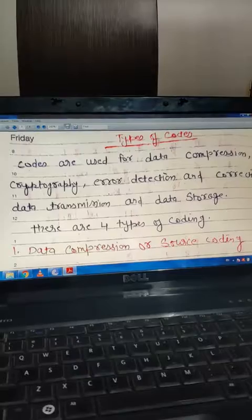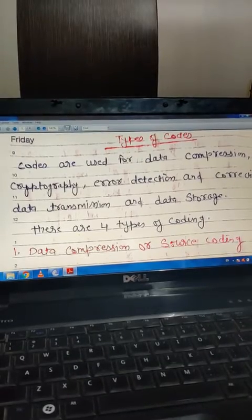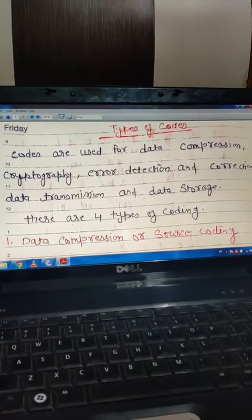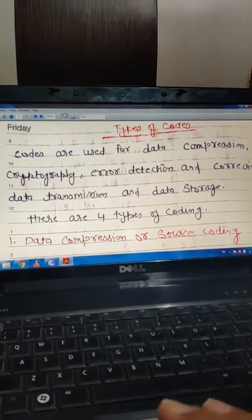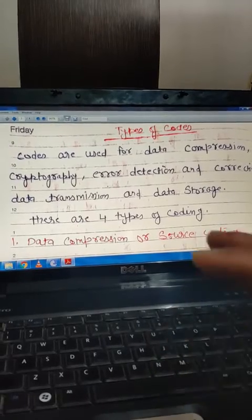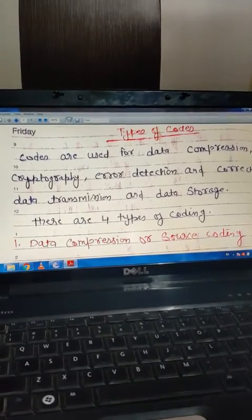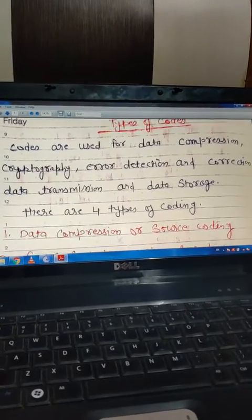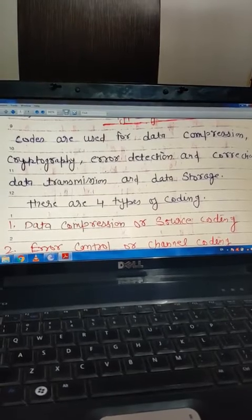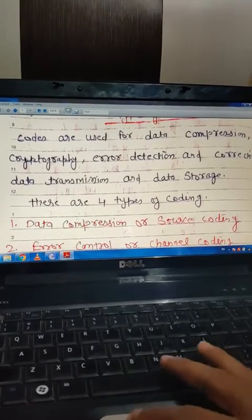Now let's see what is code and types of code. Codes are used in information theory and coding. Codes are very important because data is transmitted through a code. Data is encoded and finally we can decode the data. Codes are used for data compression, cryptography, error detection and correction, data transmission, and data storage.